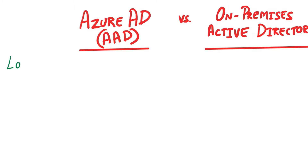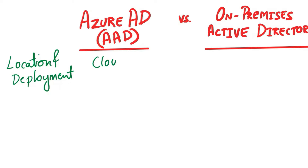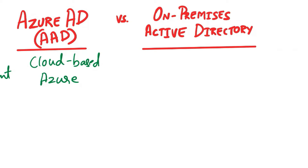The first difference is regarding location and deployment. Azure AD is a cloud-based service that is hosted in Azure, while Active Directory is on-premises, typically hosted on local servers.